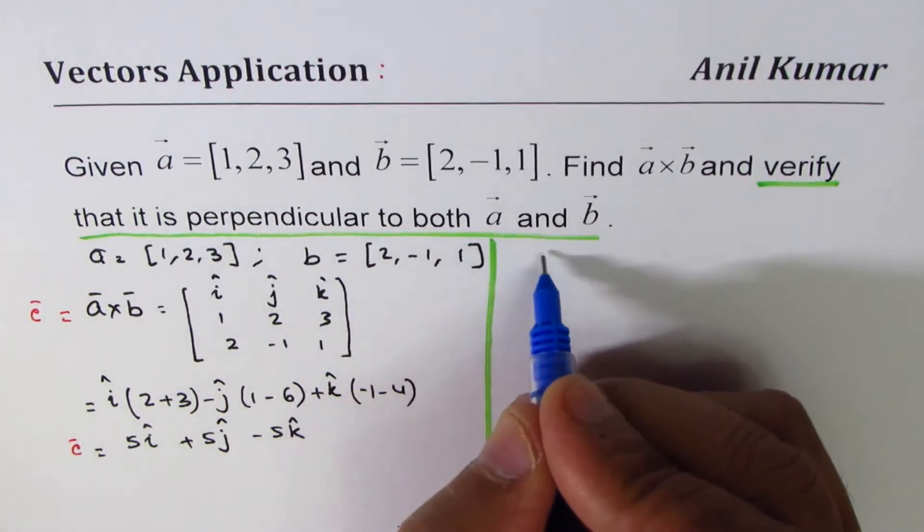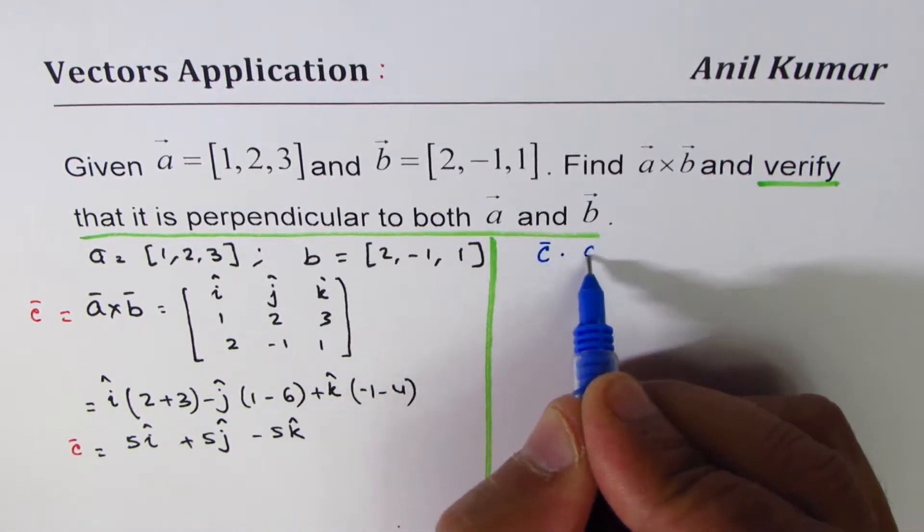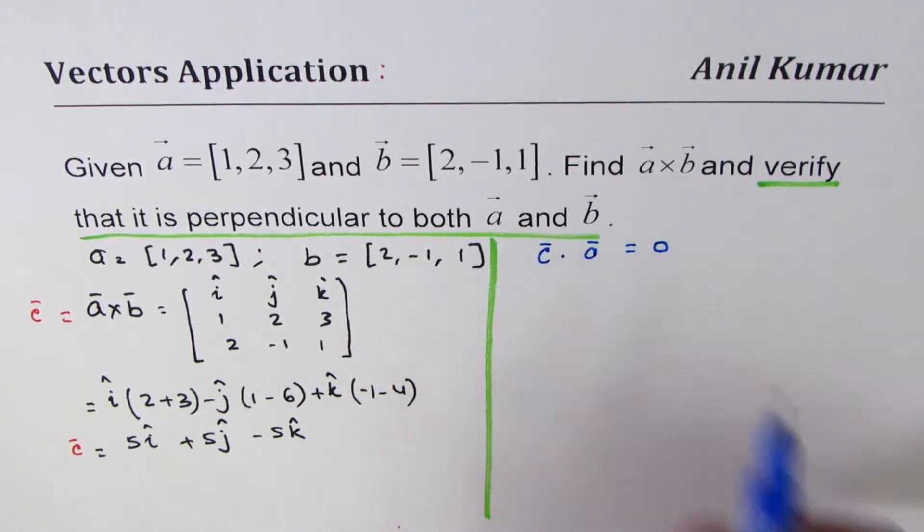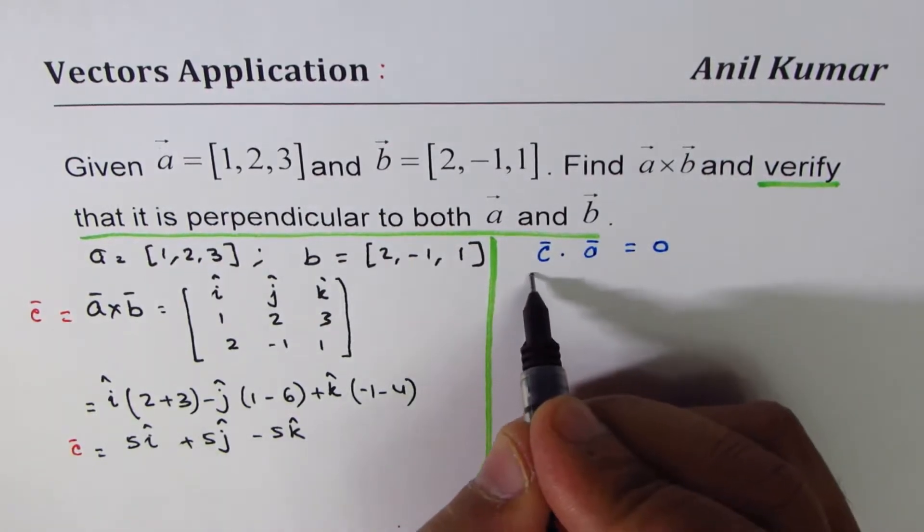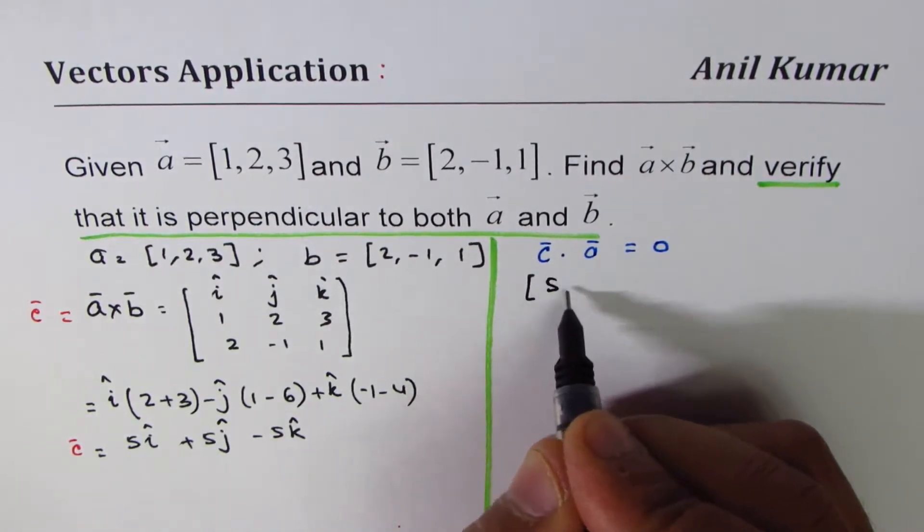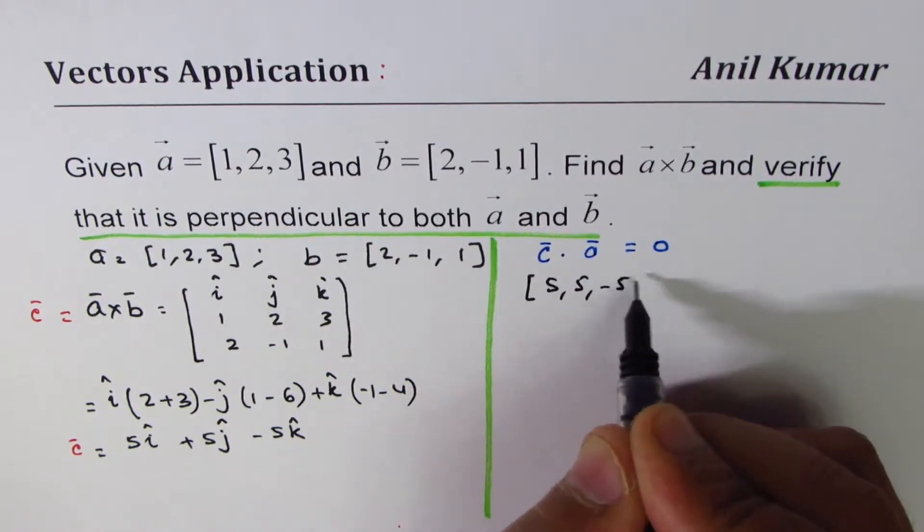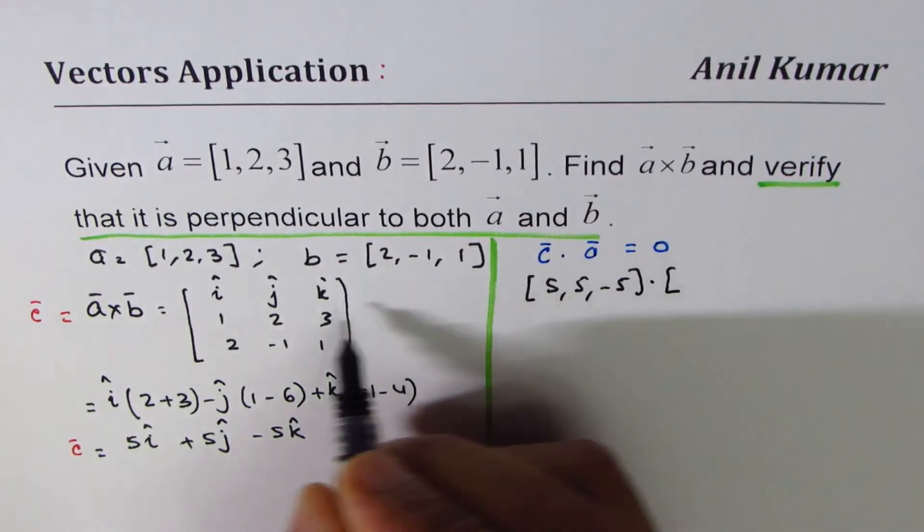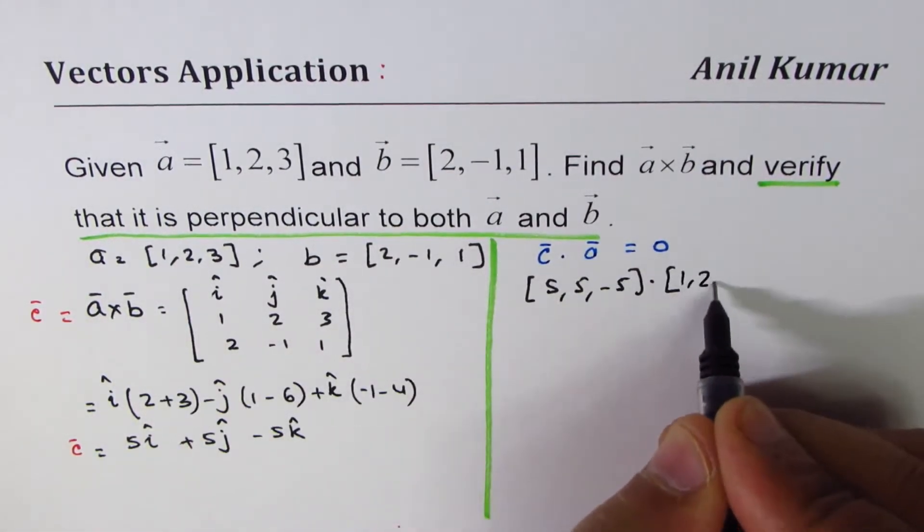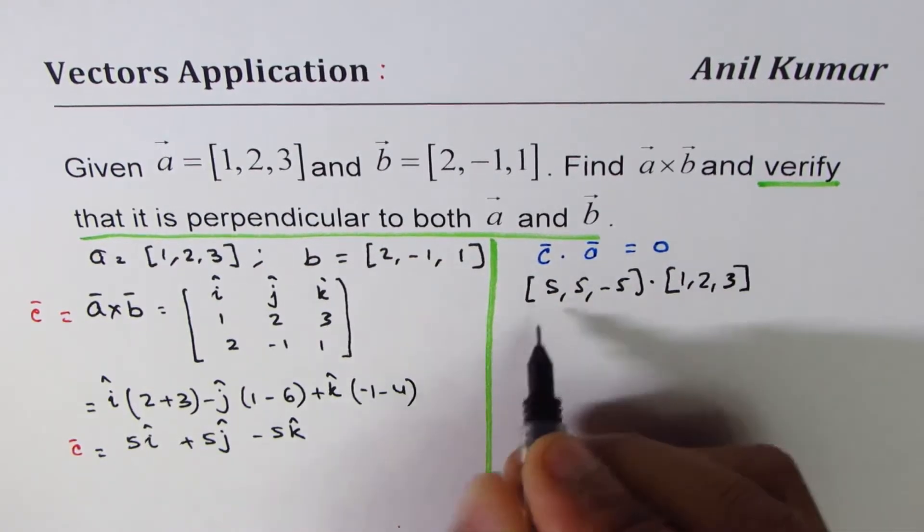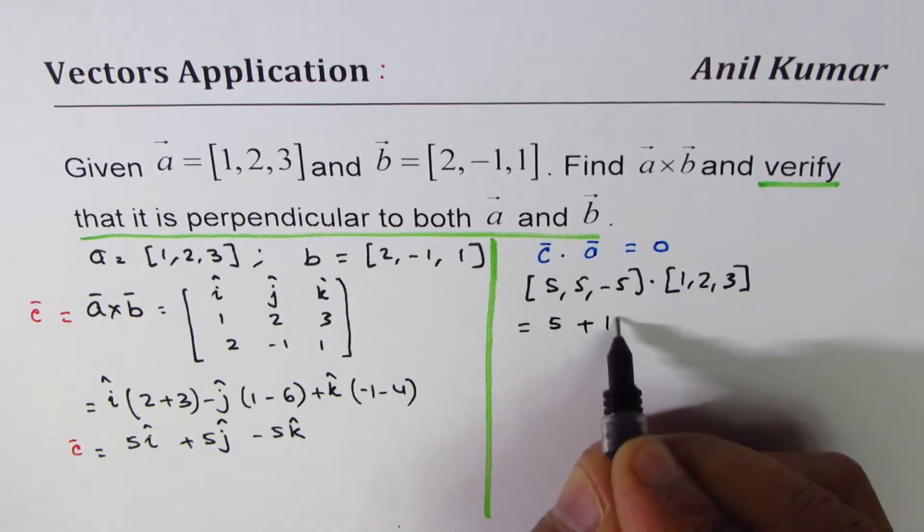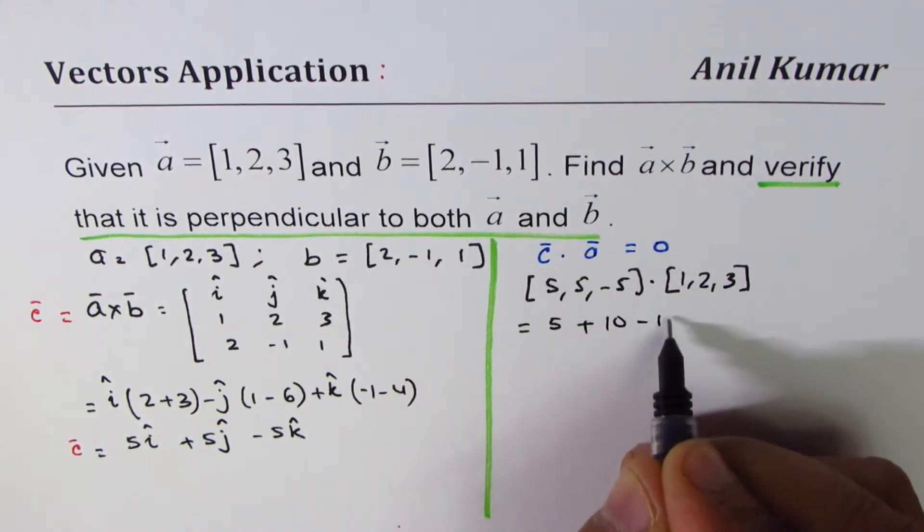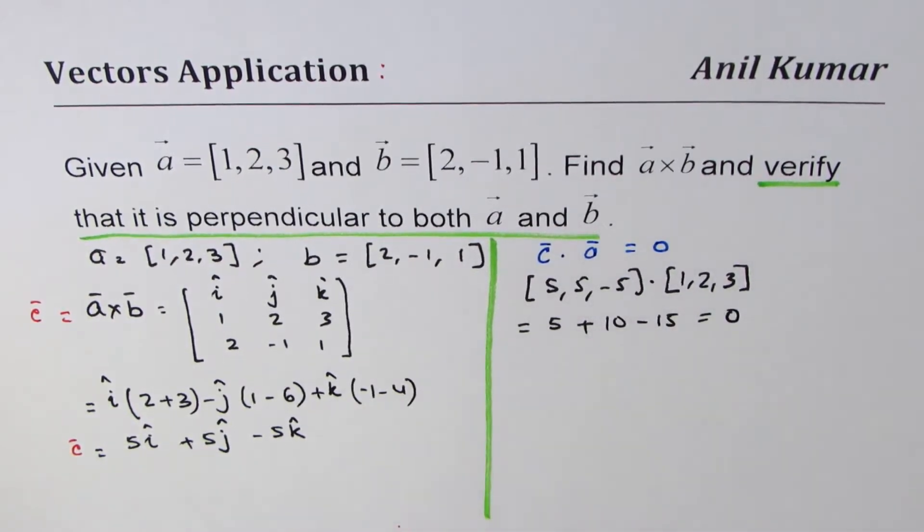Perpendicular means vector c·a should equal 0. Let's verify. Vector c is [5,5,-5] dot a is [1,2,3], and that is 5 times 1 is 5, plus 5 times 2 is 10, plus -5 times 3 is -15, which indeed is 0.